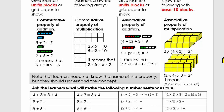Let's look at the associative property of addition. Again, you don't need to know the word — you need to understand the concept. What we have is two rods. On the first rod we have four plus two, and here we have three. So the one rod we're going to put in brackets: four plus two, that equals six plus three equals nine.